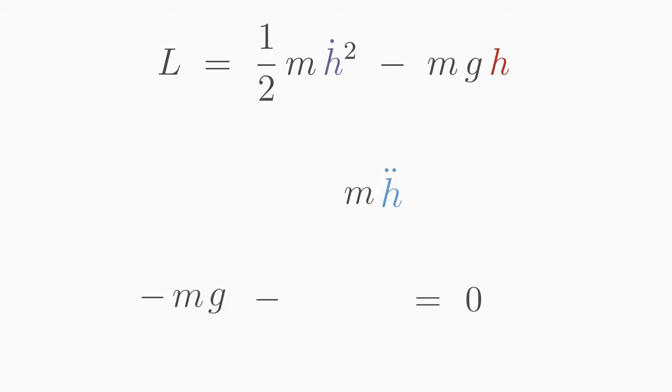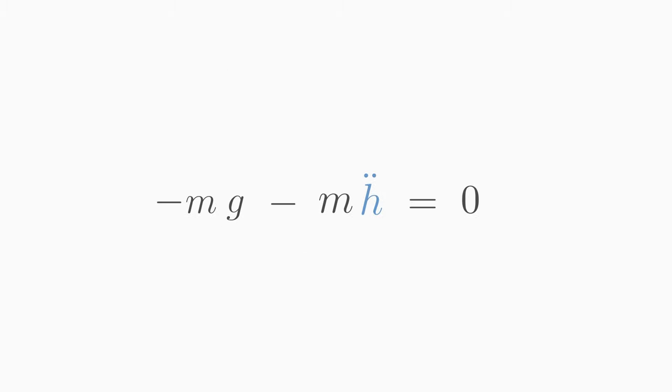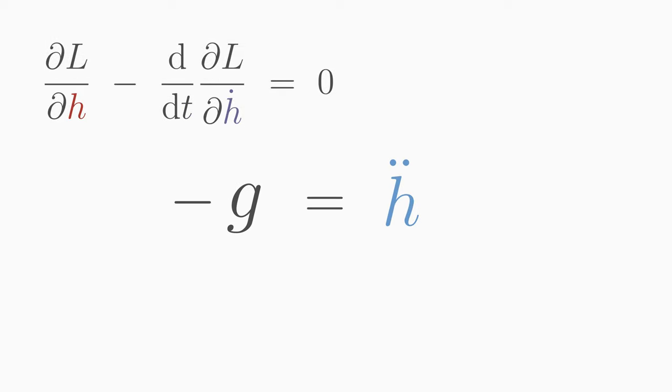Let's combine our results. Let's cancel the mass m and bring h dot dot to the other side. We get a differential equation for the function h we are looking for. Here you see the meaning of the Euler-Lagrange equation. It tells us which differential equation we have to solve to find out the unknown function h of t.